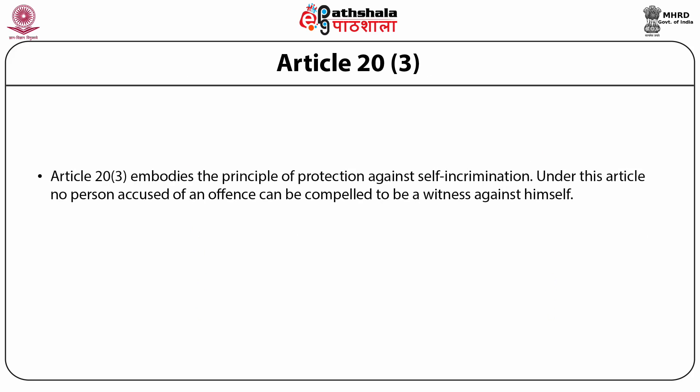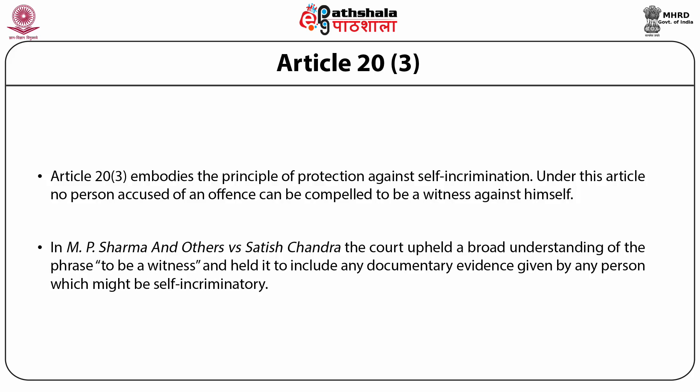Article 20 Clause 3 embodies the principle of protection against self-incrimination. Under this article, no person accused of an offence can be compelled to be a witness against himself. One could say that this is one of the most important protections in any democratic society. In the United States, you will often hear in movies: 'I plead the fifth' — meaning the Fifth Amendment of the United States Constitution, which essentially protects citizens from self-incrimination. In the case of MP Sharma v. Satish Chandra, the court upheld a very broad understanding of the phrase 'to be a witness' and held it to include any documentary evidence given by any person which might be self-incriminating. Section 300 essentially extends protection also to persons acquitted by a court.